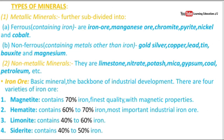Our next topic is the types of minerals. Minerals are of two main types: metallic and non-metallic. Metallic minerals are divided into ferrous and non-ferrous. Ferrous minerals contain iron, such as iron ore, manganese ore, chromite, pyrite, nickel, and cobalt. Non-ferrous minerals contain metals other than iron, such as gold, silver, copper, lead, bauxite, tin, and magnesium. Non-metallic minerals include limestone, nitrate, potash, mica, gypsum, coal, and petroleum.